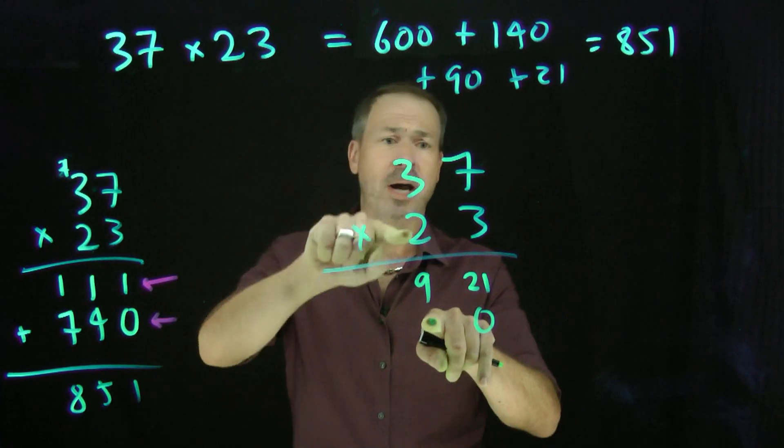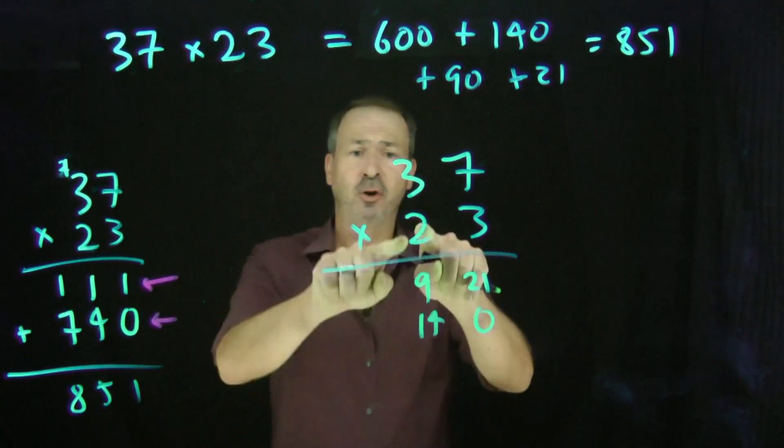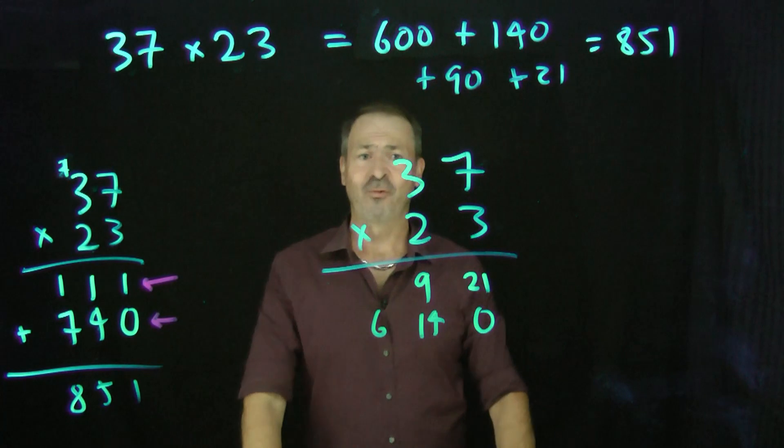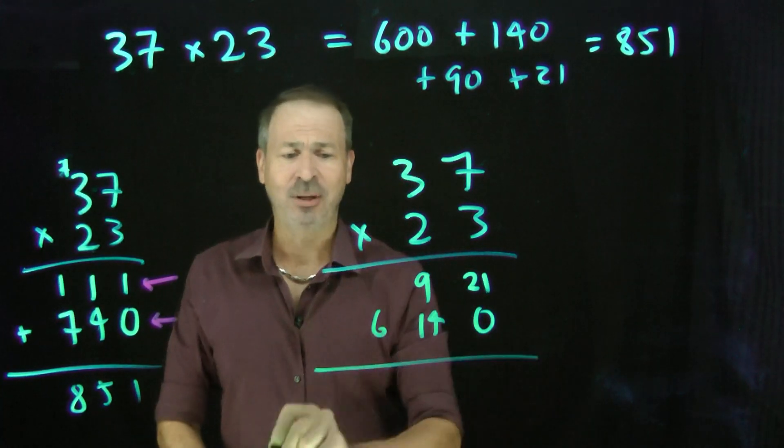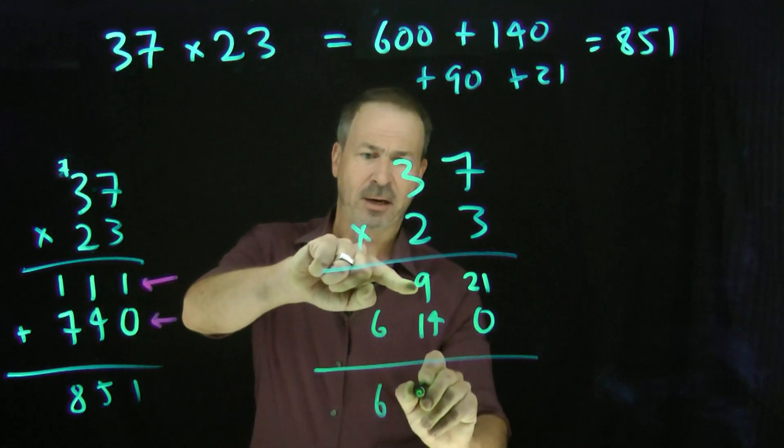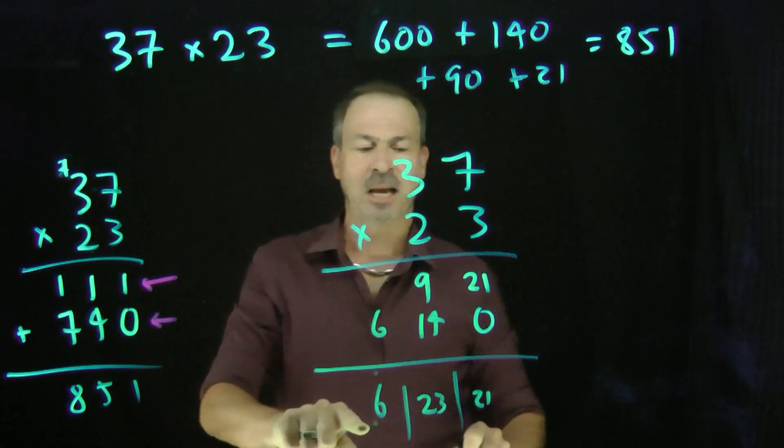Actually write 14. That's fine. And then do 2 times 3 is 6. That's great. Just write it. Now add those together. I'll get a 6. I'll get a 23. And I'll get a 21. So the answer is 623T21.